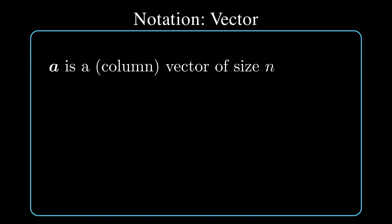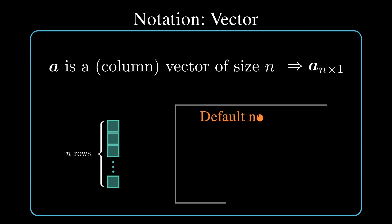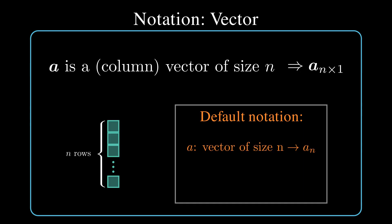Let's go over our notation for vectors. We represent vectors using lowercase characters to differentiate them from matrices. Here we have a vector of size n, so that means this vector has n rows and we define the dimensionality with a subscript as shown here. This subscript is similar to how we represented dimensionality of a matrix previously. The first subscript n shows the number of rows and a vector has only one column.